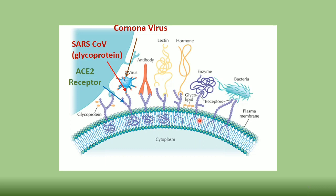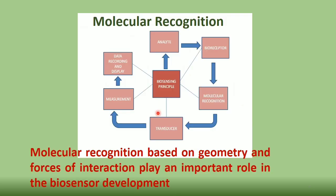Cells have many receptors on their surfaces to sense foreign bodies and changes in the environment. For example, the coronavirus is rich in glycoprotein that binds tightly with the angiotensin-converting enzyme 2 (ACE2) receptor on human body cells, leading to coronavirus infection. Molecular recognition is important in biosensor development.